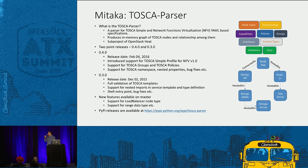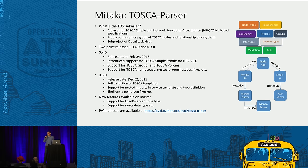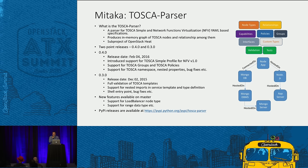With 0.3, we're doing full validation of TOSCA templates — giving compile errors when validating a template — plus support for nested imports. TOSCA Parser is used as a library, but we also created a shell utility program for folks to play with. During this cycle we created the utility and have other features available on master, like support for load balancer and range type.